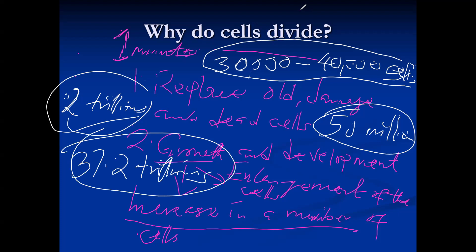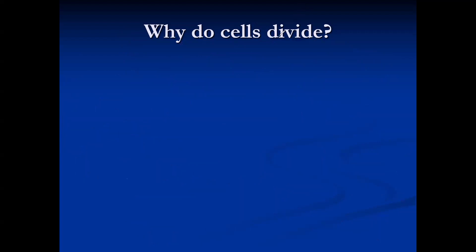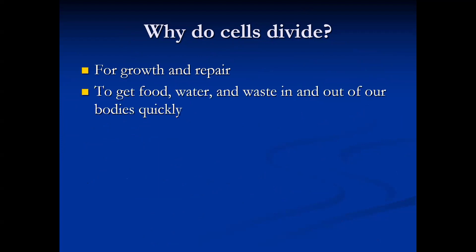So the major reasons why our cells divide are to replace old, damaged, and dead cells, and also for growth and development. Additionally, cells divide for repair — when a cell is damaged it needs to be repaired, which requires cell division. Cells also divide to help exchange nutrients, water, and waste in and out of the body efficiently.